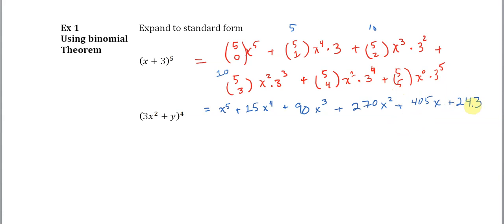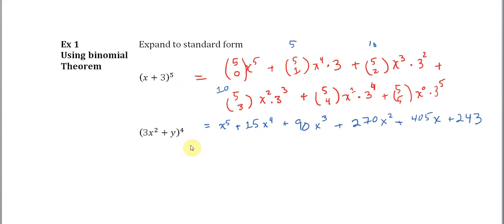So there you have it. A fairly straightforward application of the binomial theorem. We just have to be a little bit careful because we're raising a number to a power here, and then we take that and multiply it by the combinations that we have here in front of each of those values.